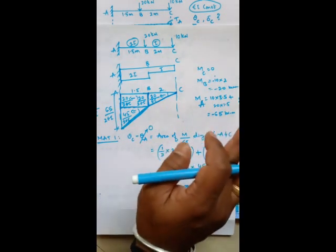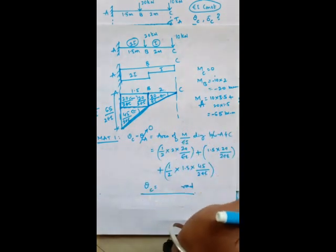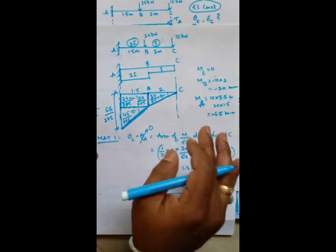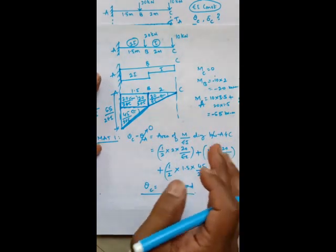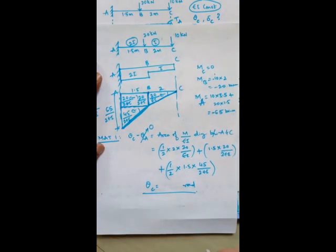This is how you handle a varying moment of inertia. If the value of I changes, adjust the M/EI diagram accordingly for each segment.